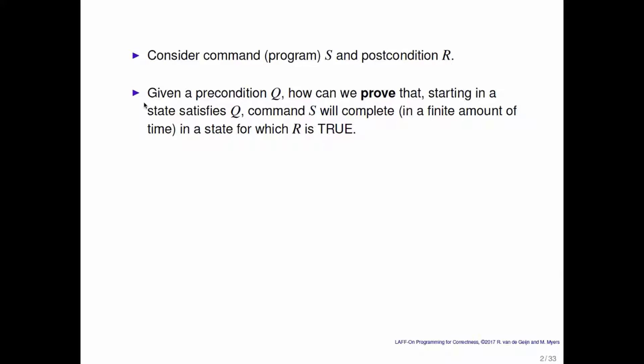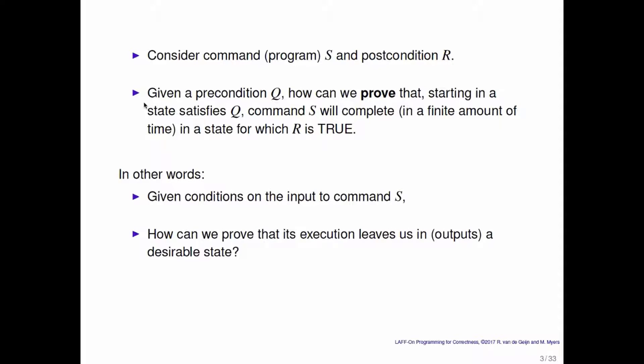Let's consider a program or command, denoted by S, and a postcondition R. Given a precondition Q, how can we then prove that, starting with an input described by predicate Q, S will complete in a finite amount of time in a state described by R — in other words, with output that satisfies the predicate R? Given conditions on the input to command S, how can we prove that its execution leaves us in a desirable state?